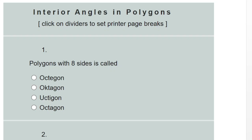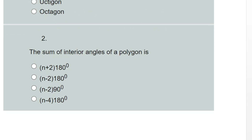Hello everyone, welcome to this class. This is a correction to interior angles in polygons and we have about six questions. The first question asks: a polygon with eight sides is called what? We have to look for 'octagon.' The right spelling of octagon is the last option, option G.